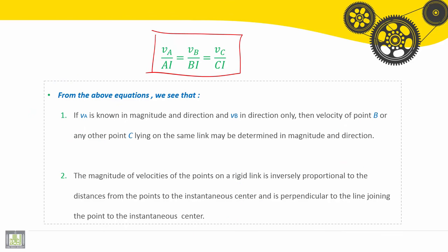From this equation we can see: if V_A is known in magnitude and direction, and V_B in direction only, then velocity of point B or any other point C lying on the same link may be determined in magnitude and direction.